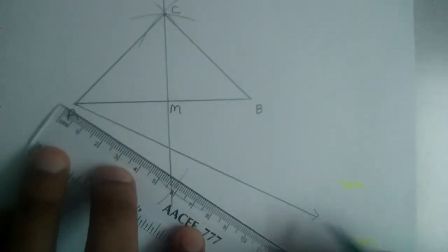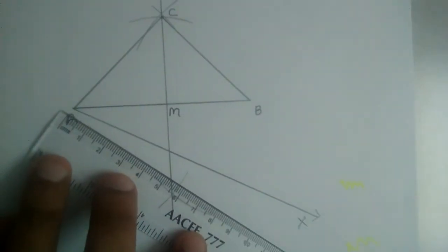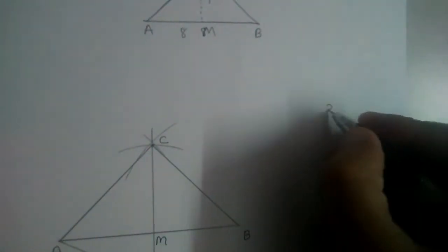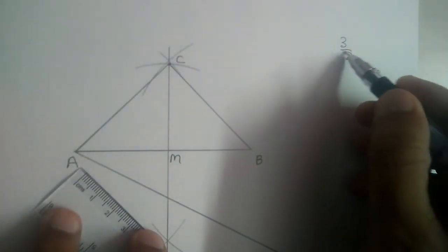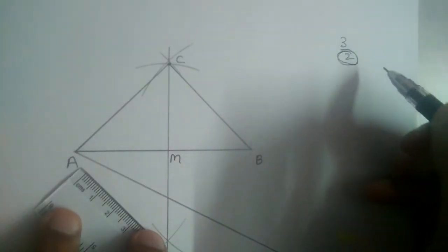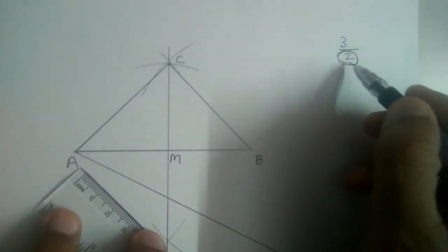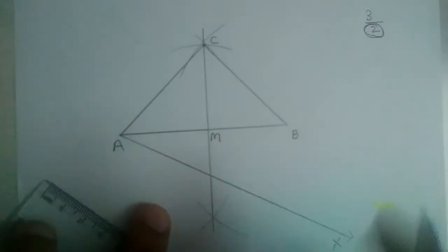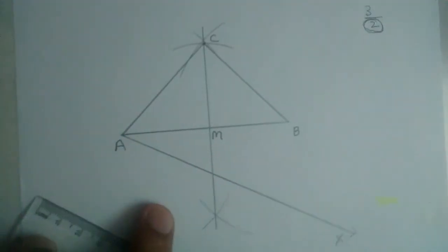Let it be AX. The ratio is 3 by 2. So what was our trick? We should take the denominator. It does not matter whether the scale factor is greater than 1 or less than 1. Whatever the denominator number is, first we should draw those many arcs here on AX.